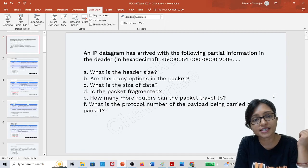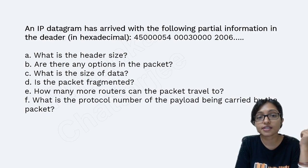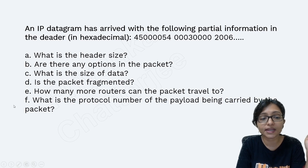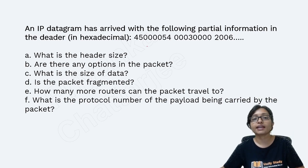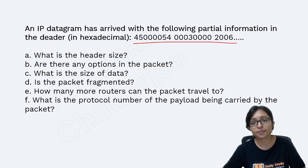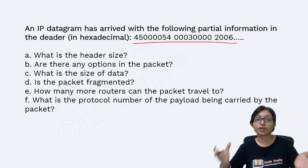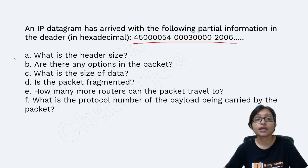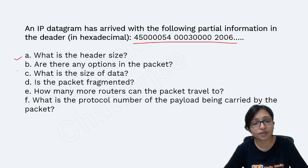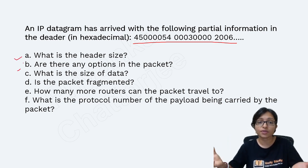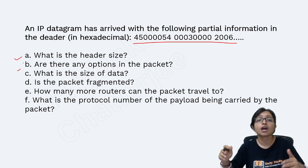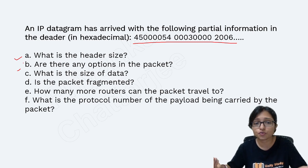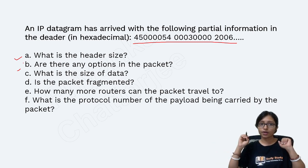Hello everyone, welcome to Unified Study. Here I am going to discuss an IP datagram question — specifically an IP header question where they provide a hexadecimal number. It is a big hexadecimal number. From here you have to identify the header size, the total size of the data, whether any fragment option is there or not, whether the optional part is there or not, how many routers it can travel, and what is the protocol number.